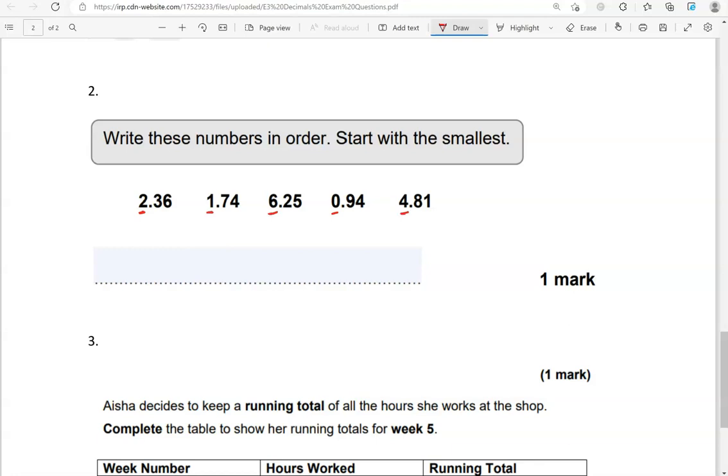To find the smallest number, we're going to look for the lowest whole number. So, we're looking here, 2, 1, 6, 0, 4. 0 is the smallest. So, 0.94 is the smallest decimal out of them all. Then, comes 1. So, we've got 1.74 coming next. Then, we have 2.36 because 2 is greater than 1.